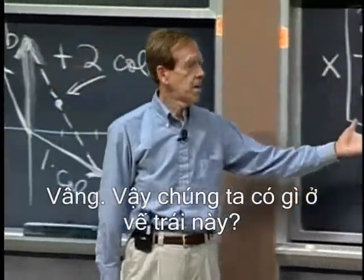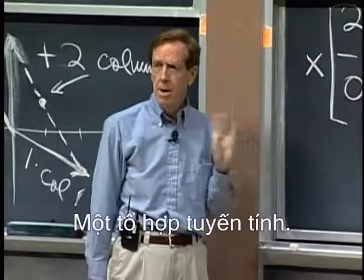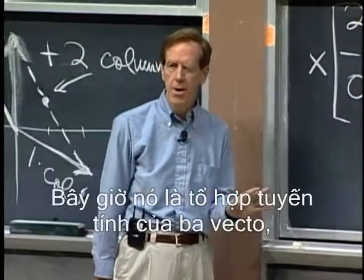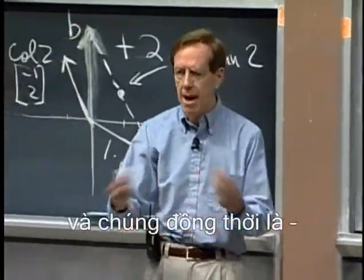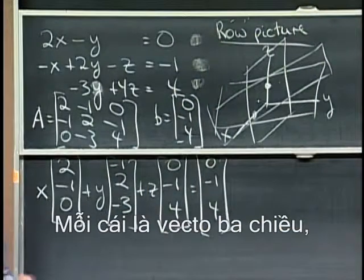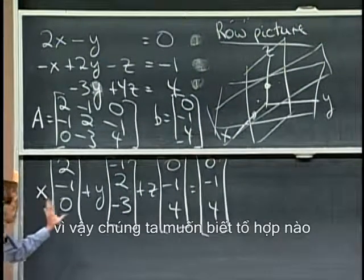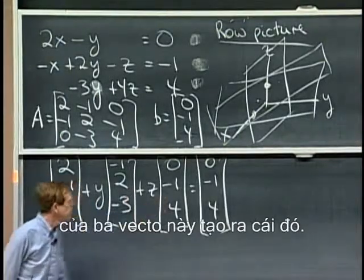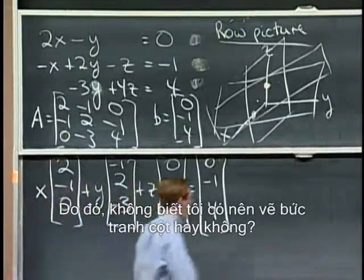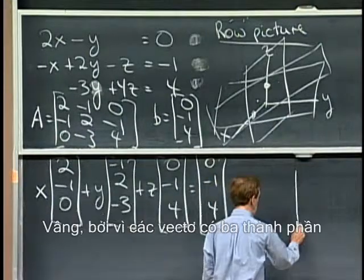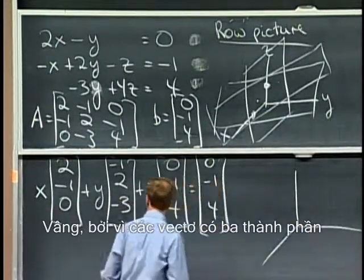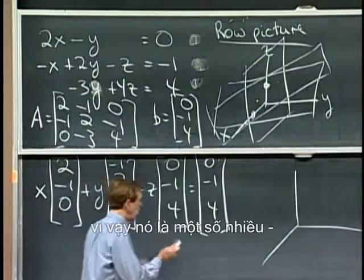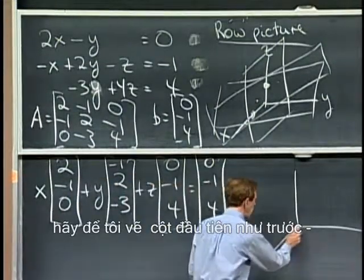So what have we got on this left-hand side? A linear combination. It's a linear combination now of three vectors, and they happen to be each one is a three-dimensional vector. So we want to know what combination of those three vectors produces that one. Shall I try to draw the column picture, then? So since these vectors have three components, so it's some multiple, let me draw in the first column as before.